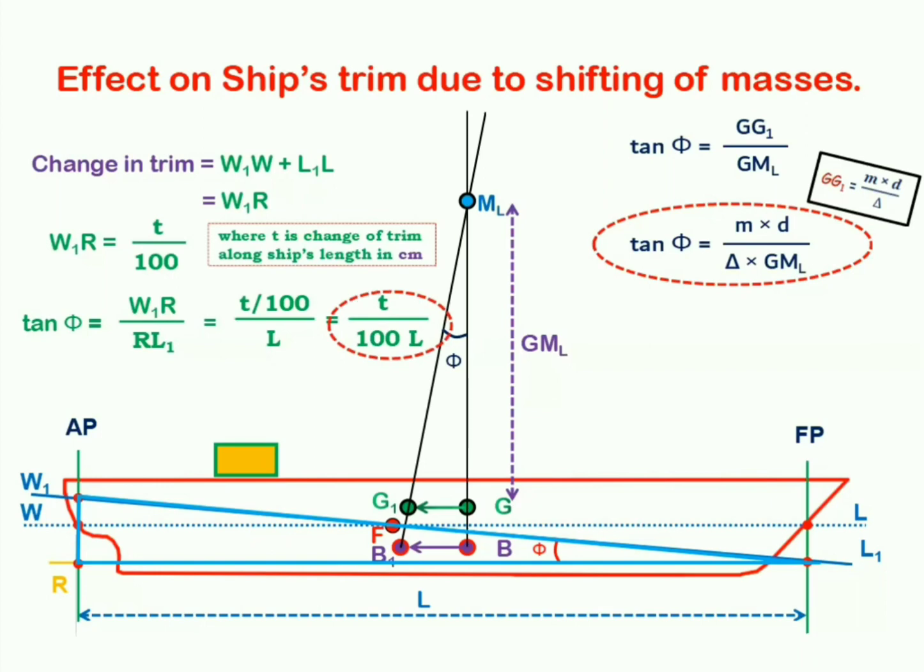t upon 100L equals m into d upon delta into GM longitudinal. We will now be simplifying this expression for the determination of small t. Small t is change of trim all along ship's length in centimeters. So, small t becomes m into d into 100L divided by delta into GM longitudinal. This is something which is going to help you out in working upon several problems. You should remember this expression.